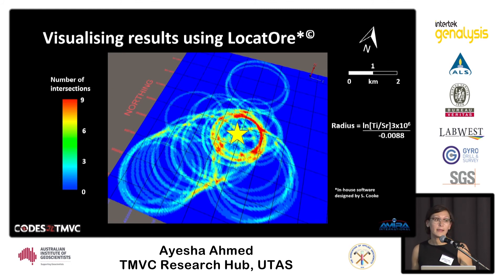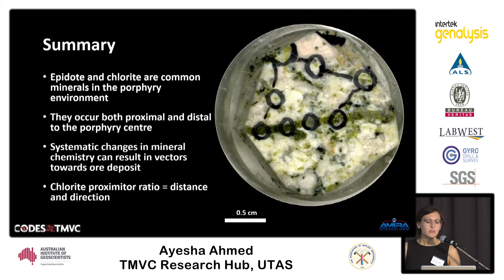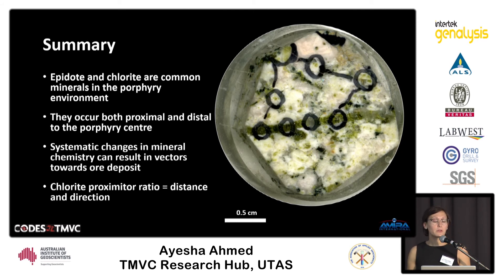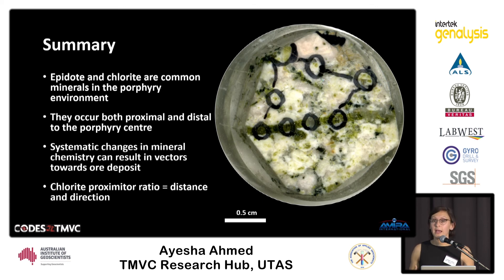To wrap things up: hopefully I've shown you the basics of propylitic mineral chemistry and how it can be applied to exploration. We use epidote and chlorite because they're common in the porphyry environment, easily identified by eye, and occur both proximal and distal to the deposit center — allowing us to record systematic changes in mineral chemistry that we can use as vectors towards a deposit center. I use the term 'vector' in its true sense: we're calculating using the chlorite proximeter equation both a distance and a direction towards mineralization. Thank you.